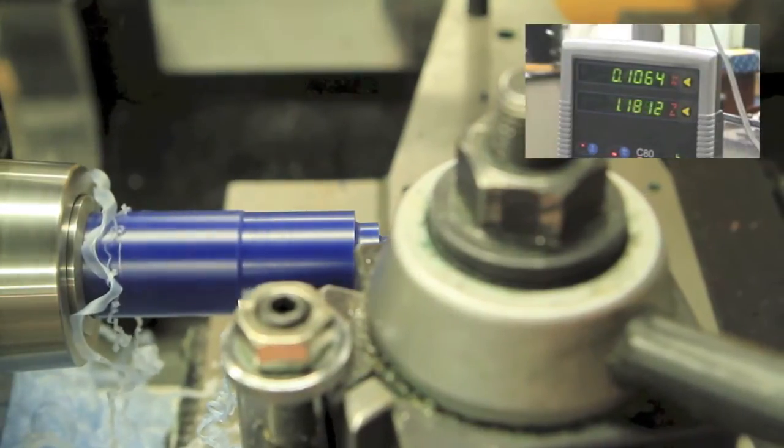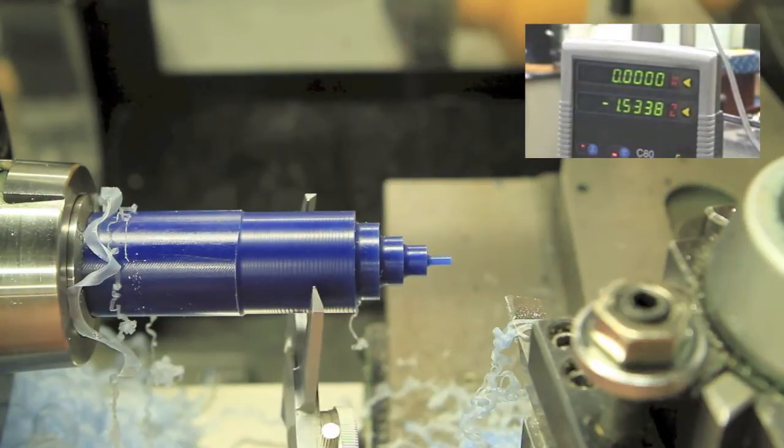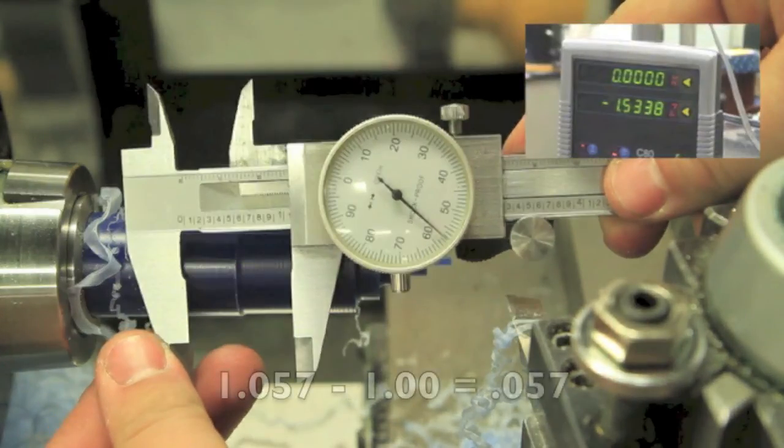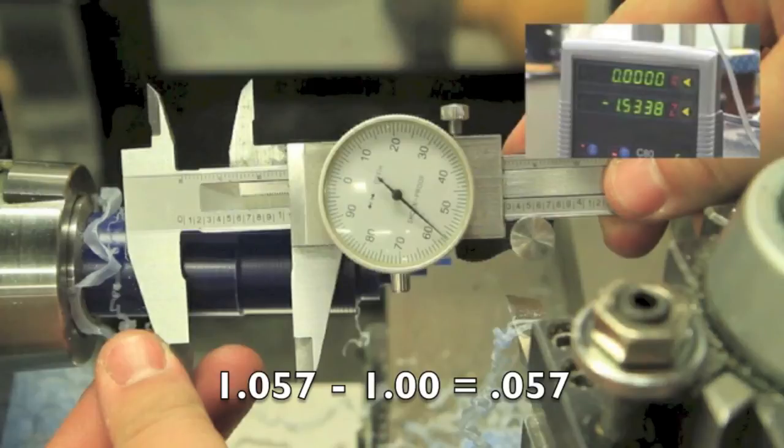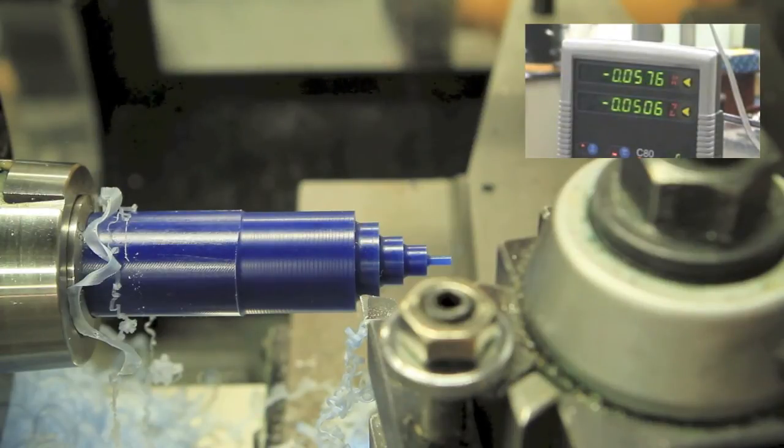When you're done with your rough cut, move the tool to the right, reset the x-axis, and take a measurement with your calipers. In this case, 1.057. Subtract your target diameter, and that will tell you how much further to go. Move the tool in that amount, then move 1.2 inches to the left.